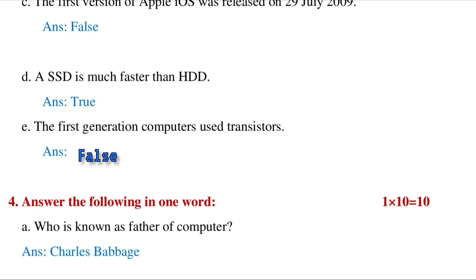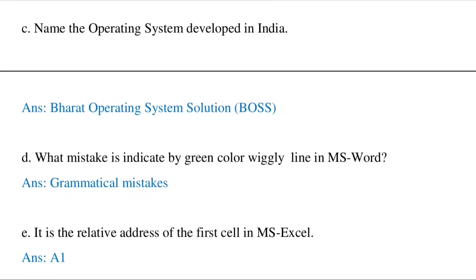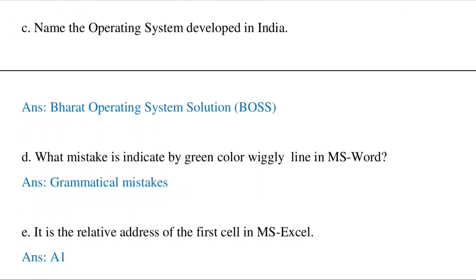Who is the father of computer? Charles Babbage. Which input device is used to record sound? Microphone. Name the operating system developed in India. It's BOSS. What mistake is indicated by the green color wavy line in MS Word? Grammatical mistake. If it is red color, then it's a spelling mistake, and if it is blue color, it's a contextual spelling mistake.